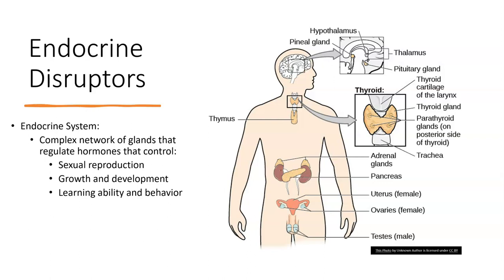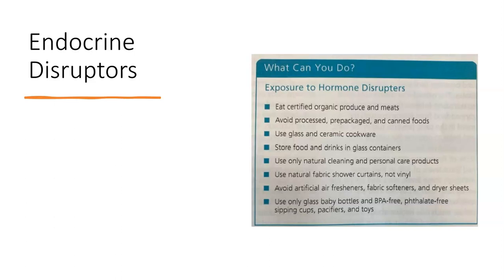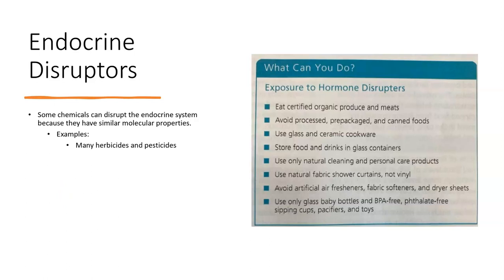Basically what those glands do is they control the production of hormones. Hormones are like messengers and help regulate things like sexual reproduction, growth and development, your learning ability and behavior. All these glands work together to produce certain hormones; hormones increase and decrease over time to regulate all kinds of body systems. So endocrine disruptors refer to the variety of chemicals that can get in and wreak havoc on your endocrine system when they reach certain levels. Some chemicals can mimic certain hormones or block the production or adherence of certain hormones, causing disruptions to those functions.